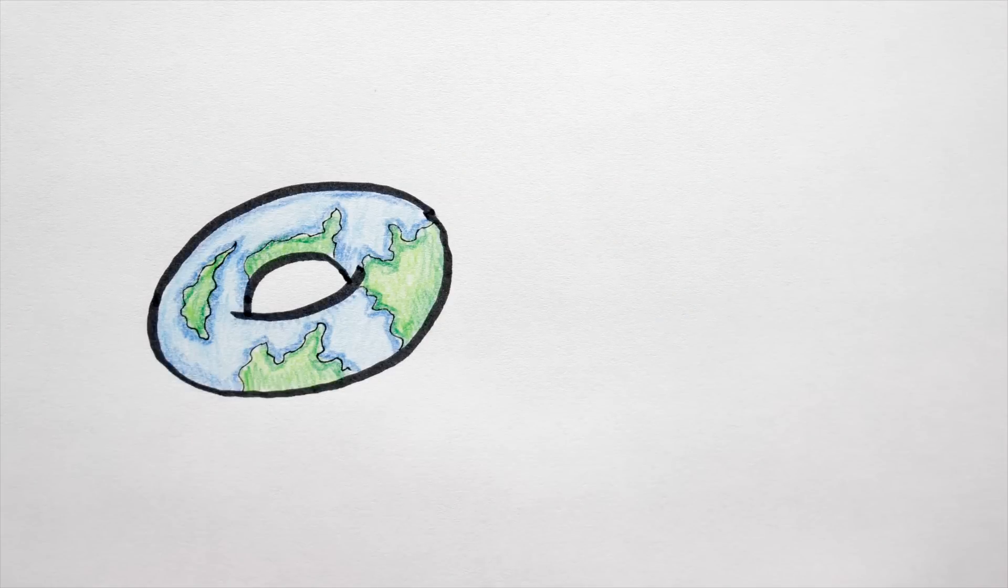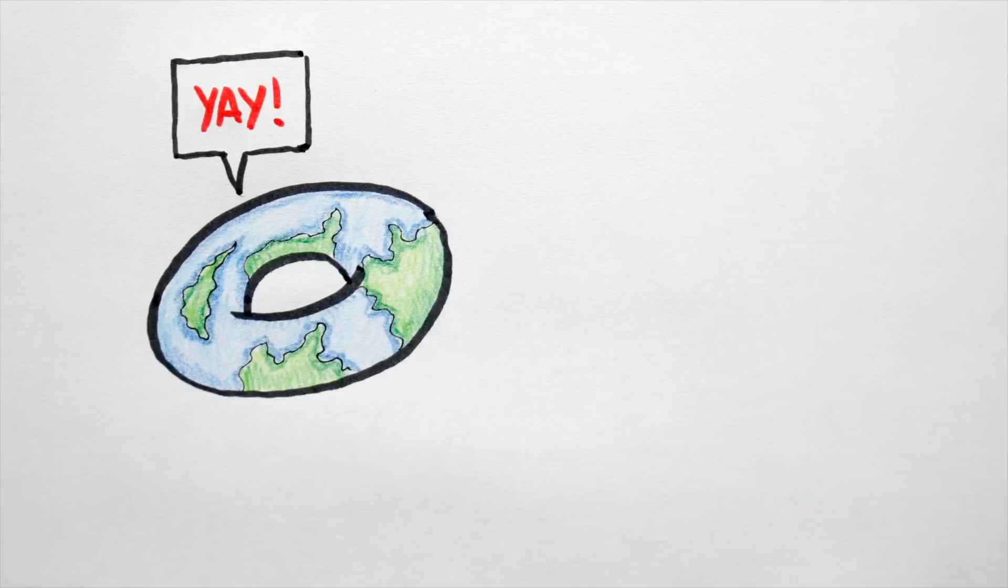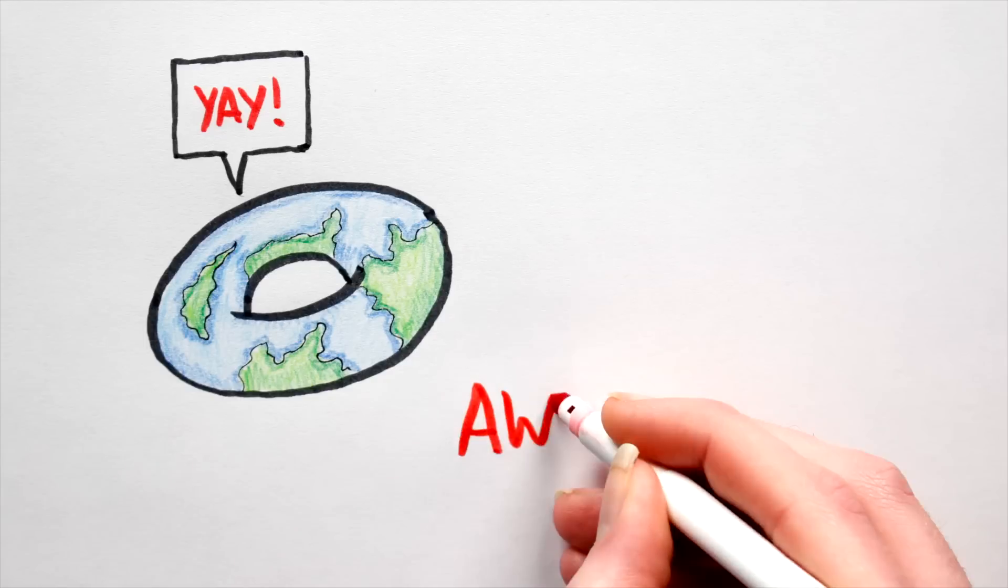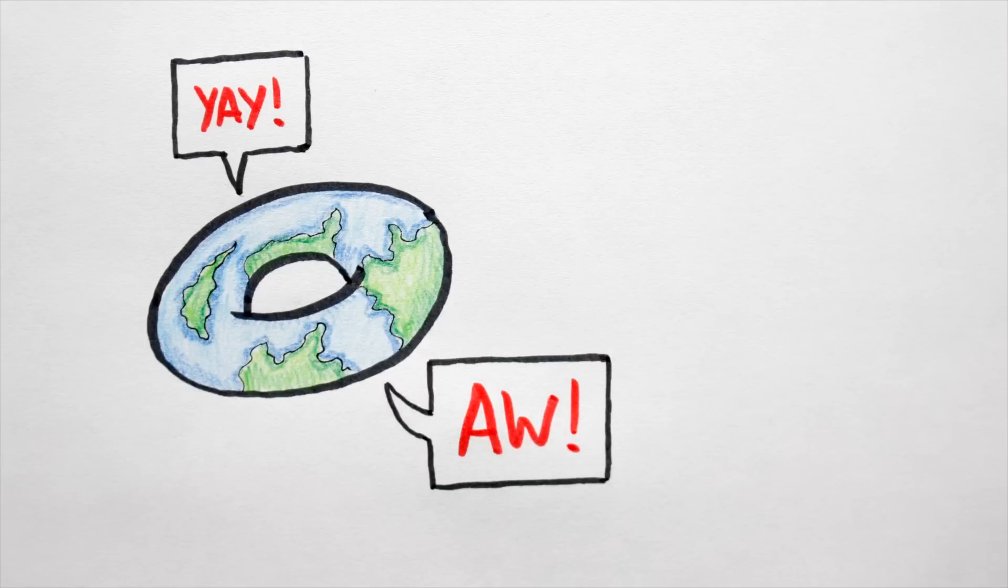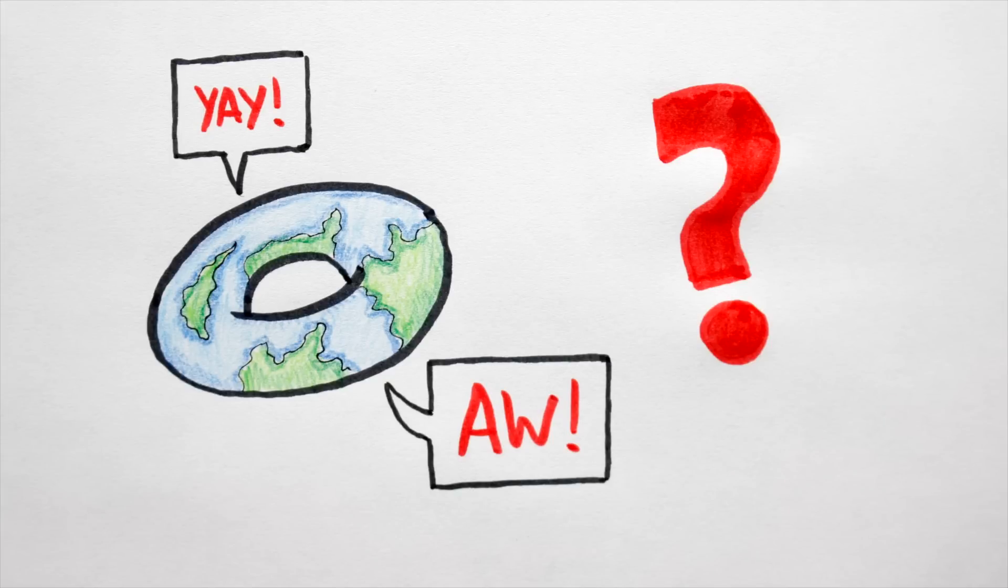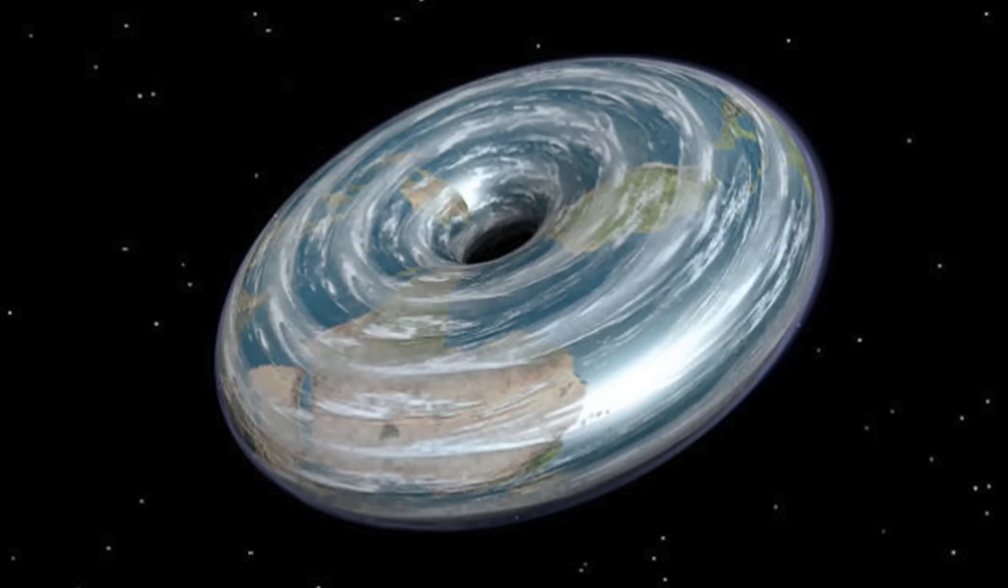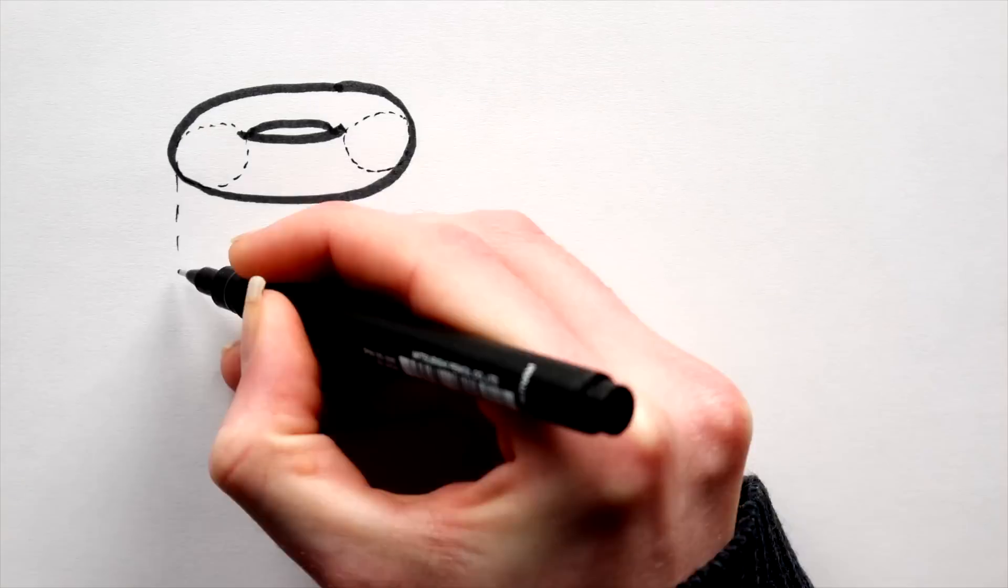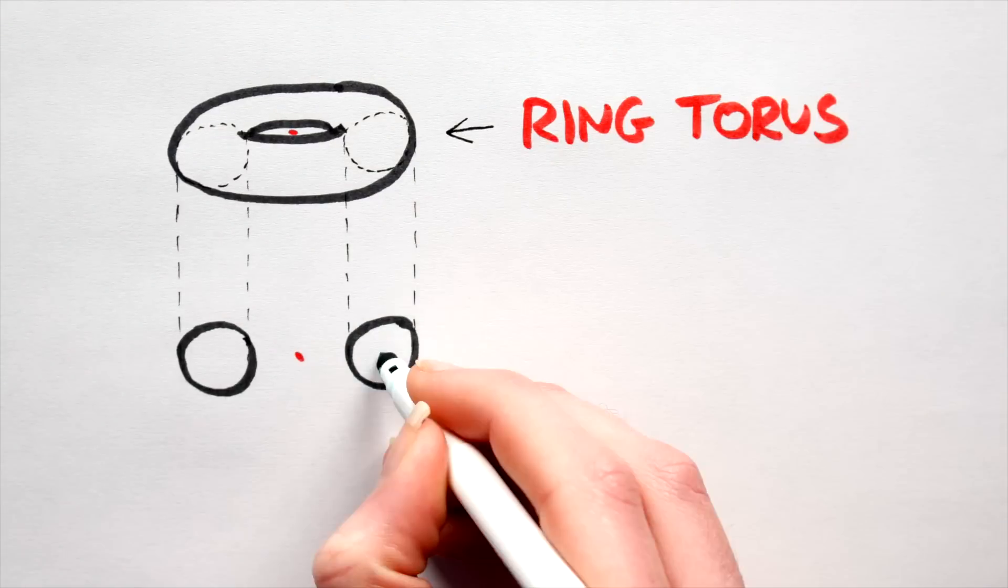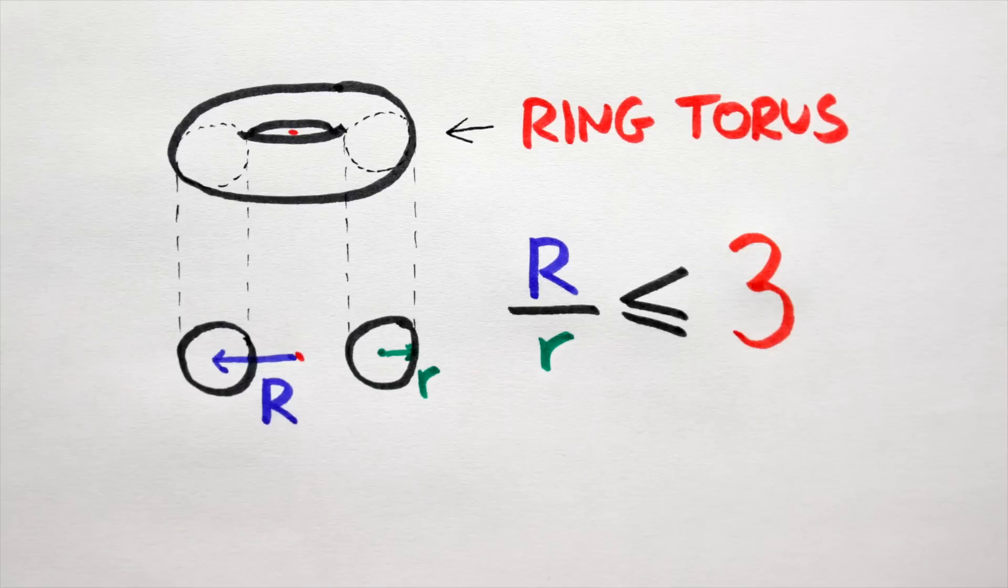In theory, the laws of physics do not forbid the existence of torus-shaped planets. In practice, however, it's extremely unlikely that they could form naturally and remain stable over geological timescales. But let's speculate a little. Let's say a toroidal world did exist. What would a donut earth look like? For starters, donut planets would probably look like ring torii, with their major radius being no greater than three times their minor radius. This is important. If the ratio of the radii exceeded three, the planet would become unstable and break up into smaller co-orbiting blobs.